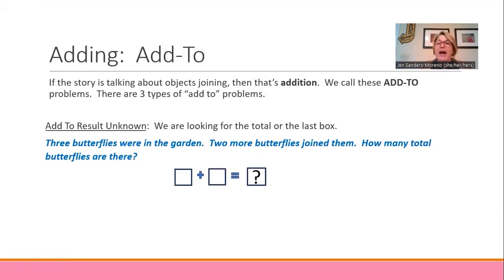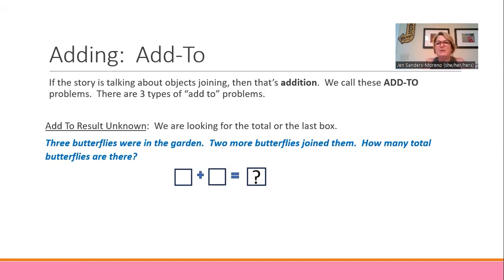So we're going to first talk about adding. For my information, we're going to talk about it as 'add to.' These are objects that are joining — and I call them objects because it could be people, animals, crayons, cookies, whatever we're talking about. So if our story talks about adding, joining, coming together, and no one's leaving — leaving means subtraction — then these are addition problems.